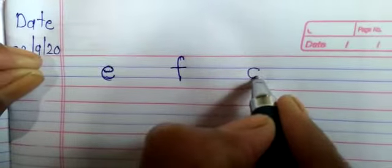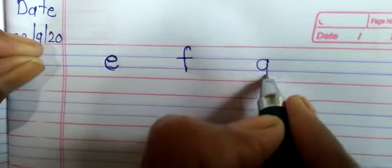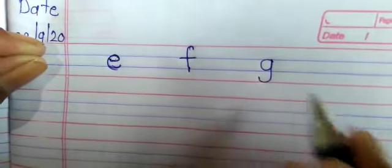Now next letter small g. Write down circle, standing line and small half circle like this.